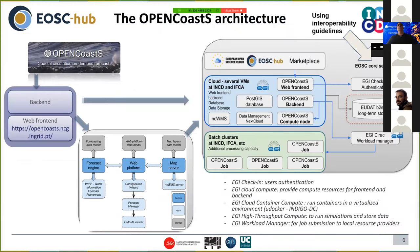For the Open Coast architecture, we started by reviewing the thematic services that exist in the EOSC catalog, and selected EGI Check-in for user authentication, EGI Cloud Compute to provide compute resources for front-end and back-end, EGI Cloud Container Compute using uDocker, EGI ISTRA output compute to run the simulations, and also EGI Workload Manager. This also uses the interoperability guidelines provided by EOSC for the core services as mentioned in the presentation before.